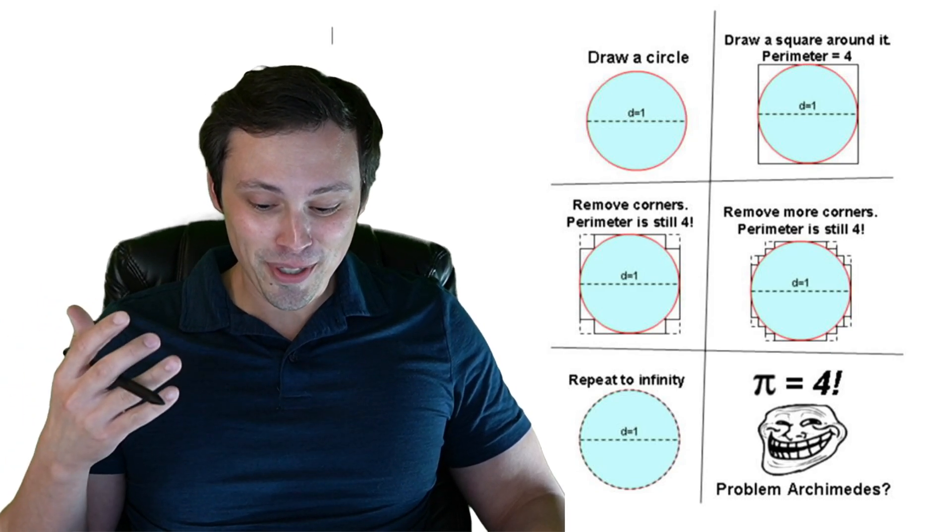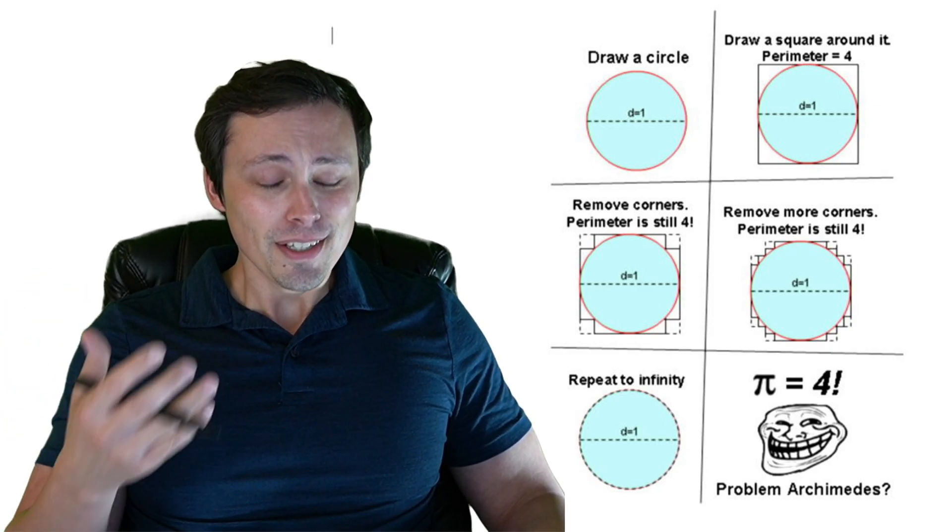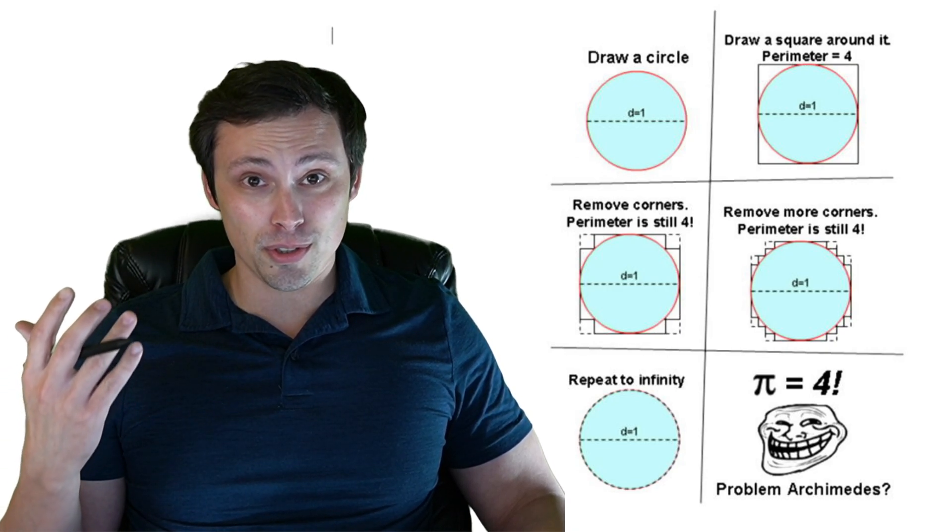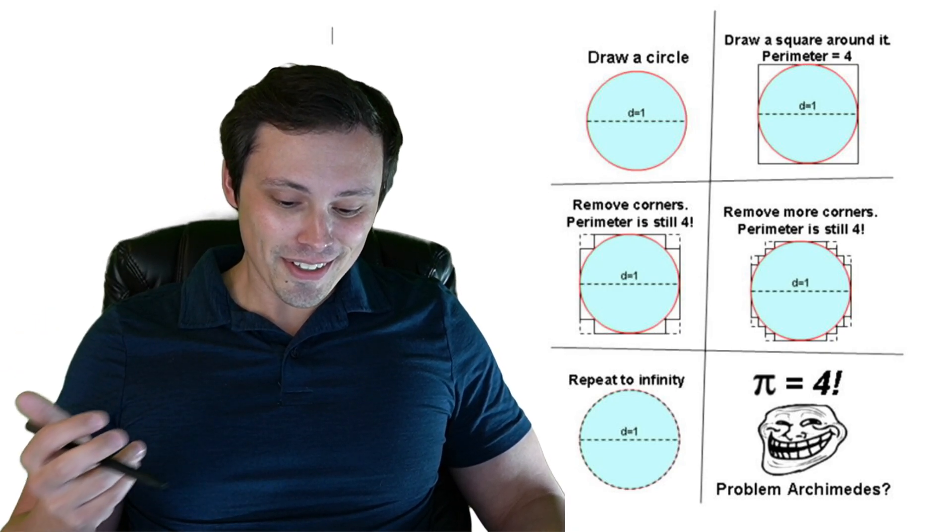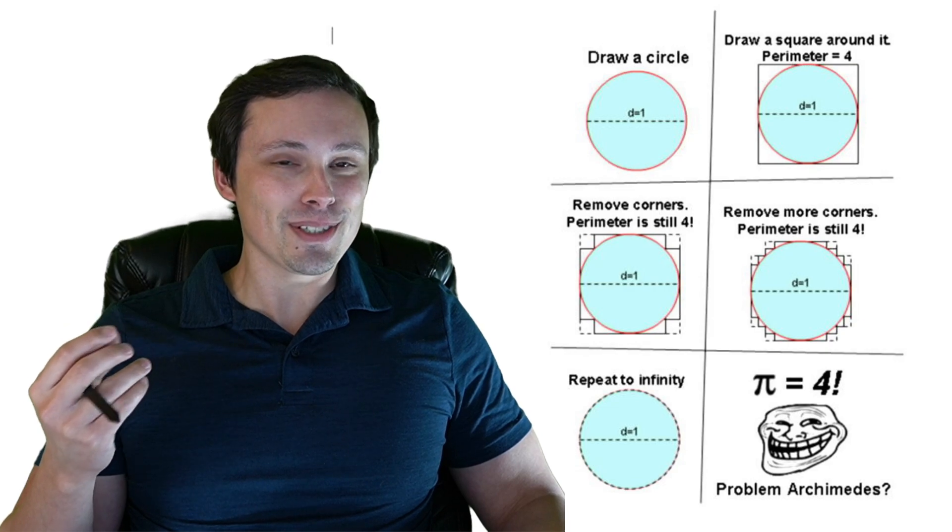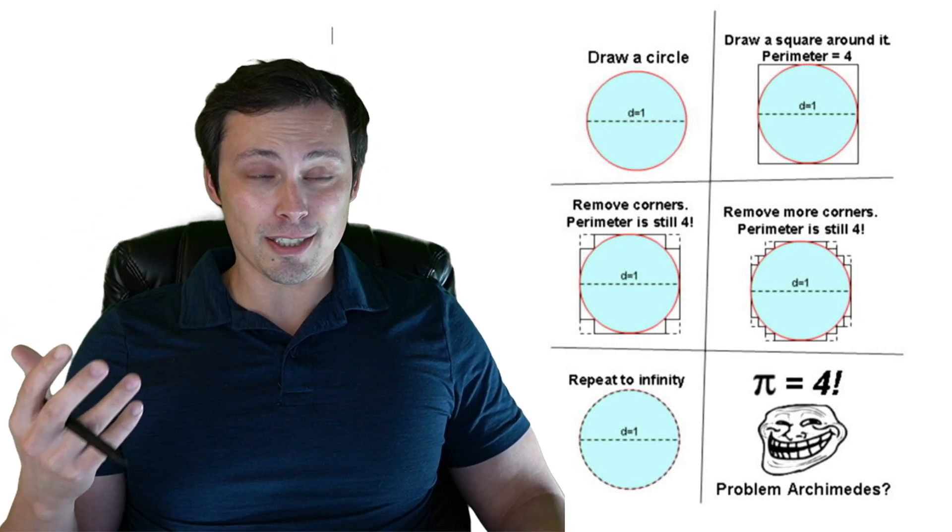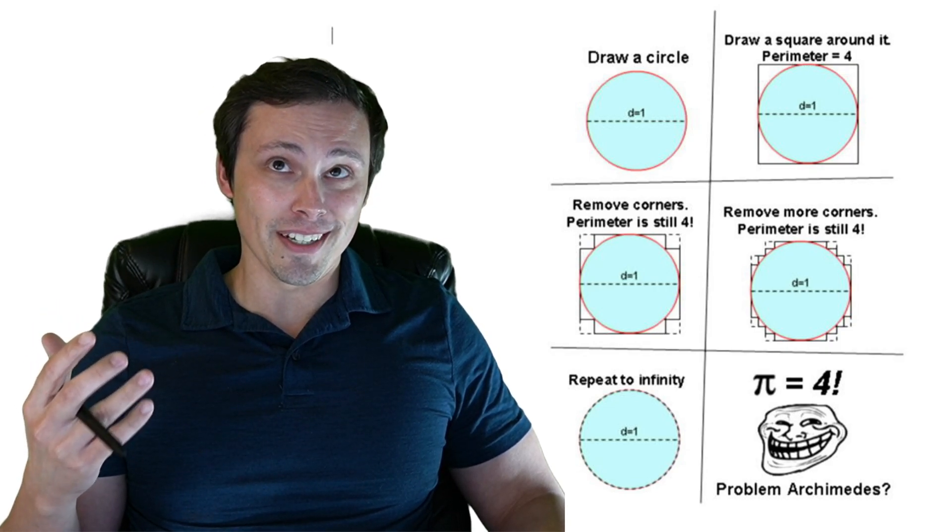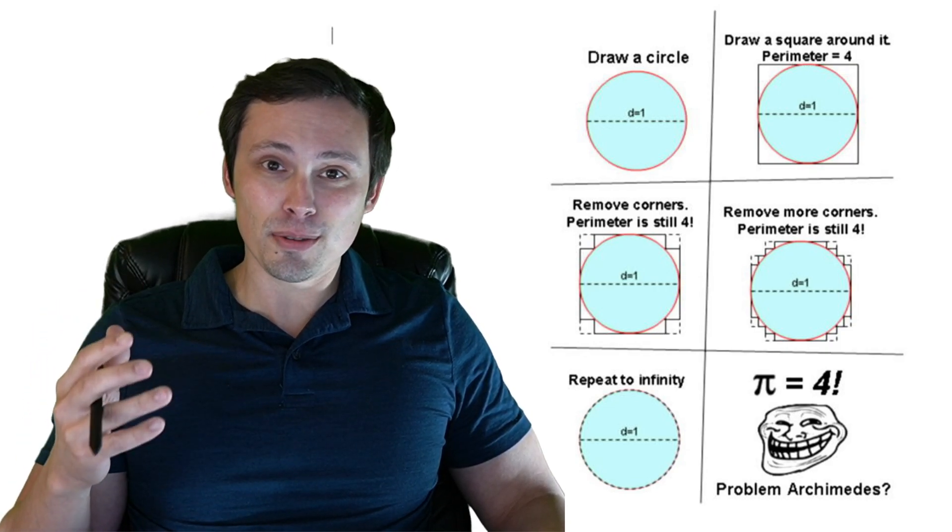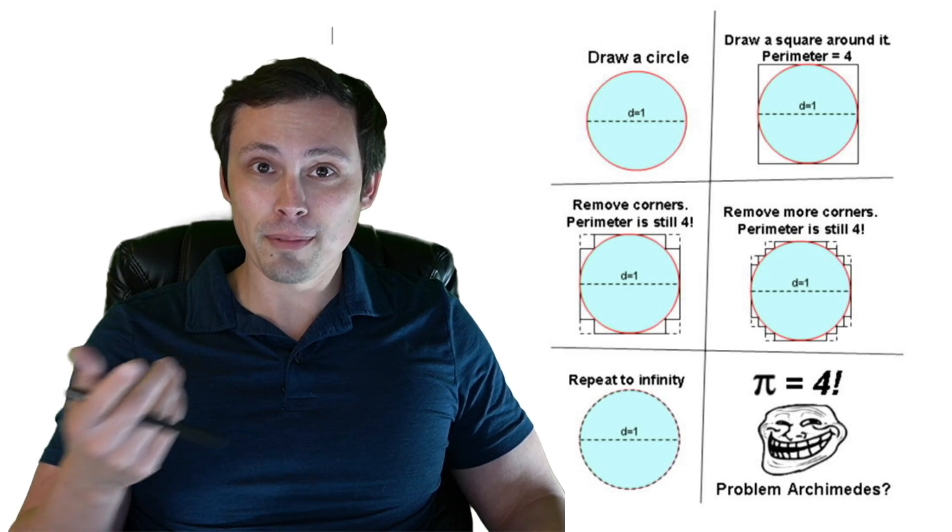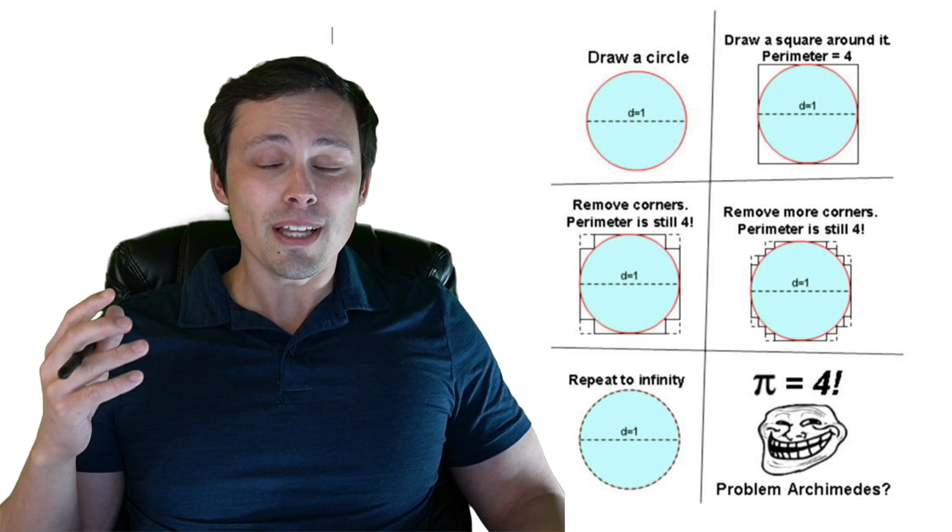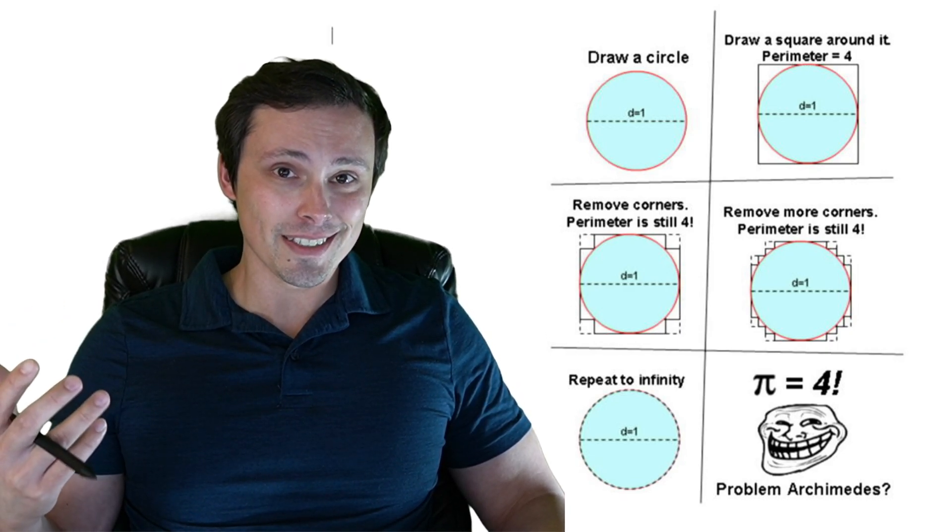So here we have π equals 4, and my initial attempts to refute this, my mind instantly jumps to calculus. But I need to be able to refute this in a way that can convince a high school geometry student who's annoying me with the meme.